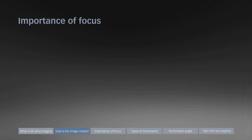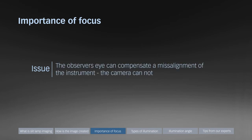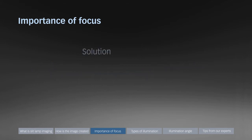This section is dedicated to the importance of focus. A common issue in slit lamp imaging is that the observer has a perfectly sharp view while the images are out of focus. This is because the observer's eye can compensate a misalignment of the instrument, but the camera cannot.